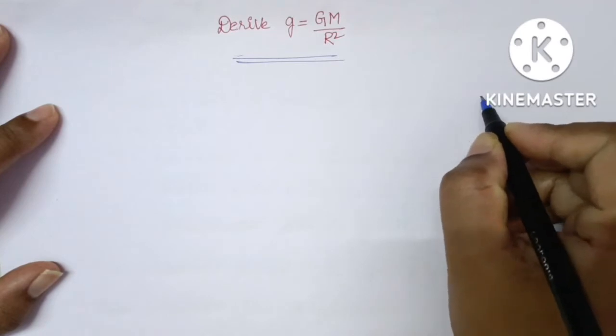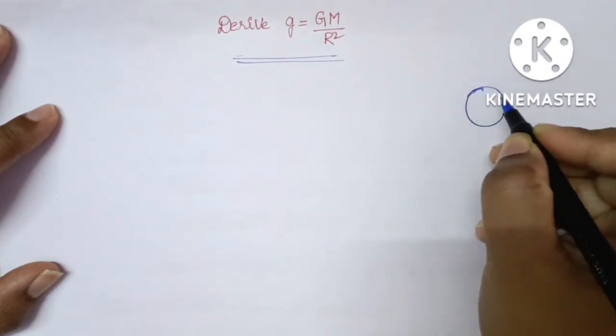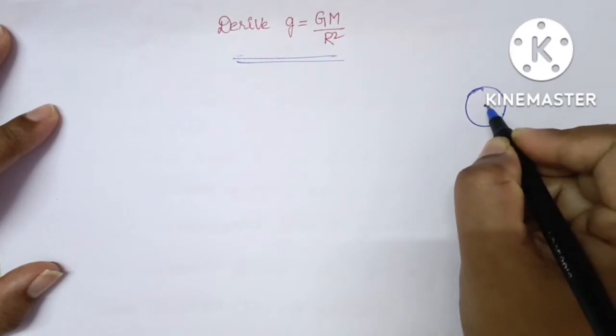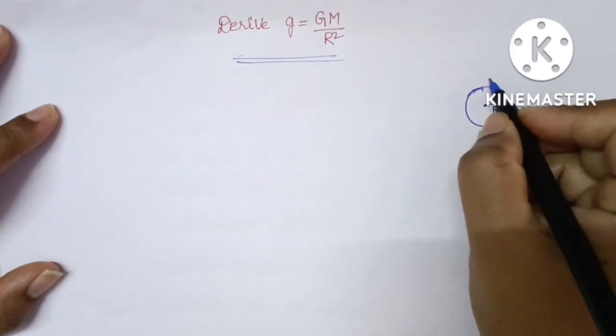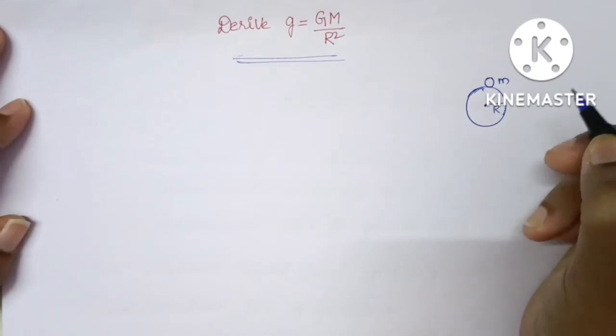For that consider the Earth and let it be the radius of the Earth R, and we are considering a mass of small m on the surface of the Earth.